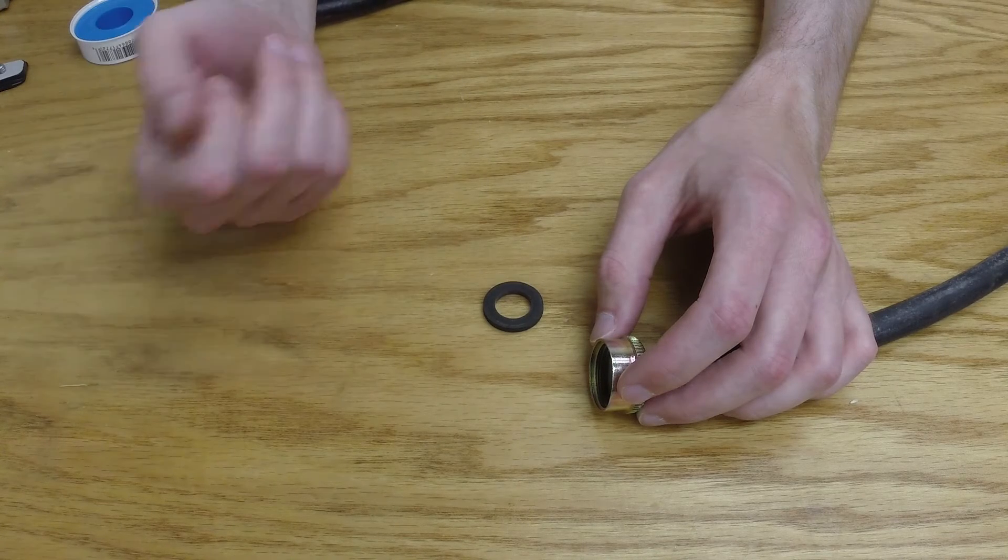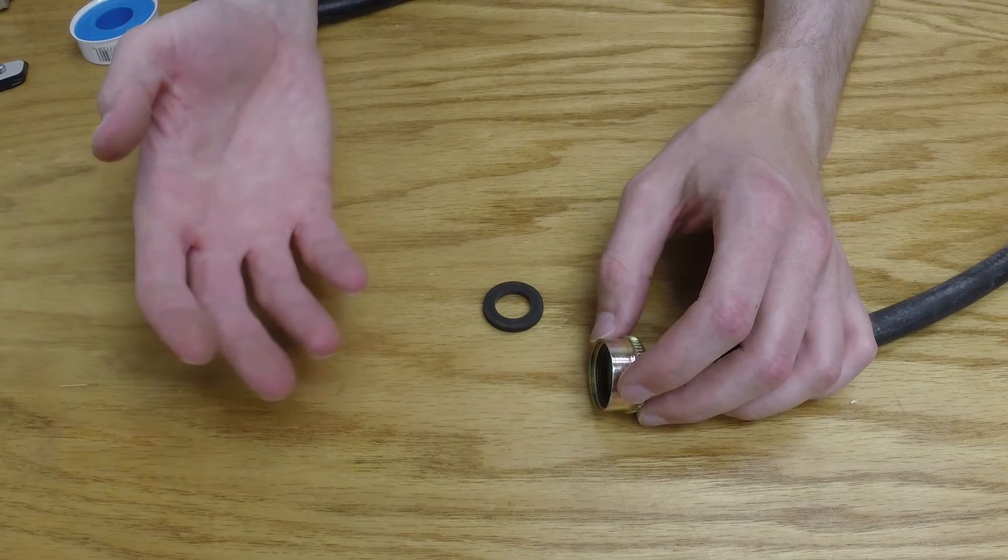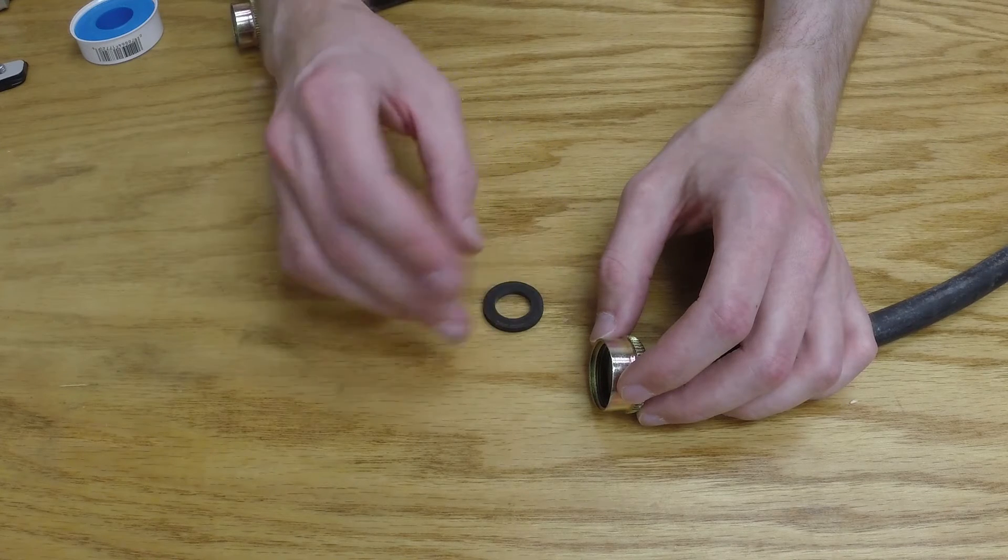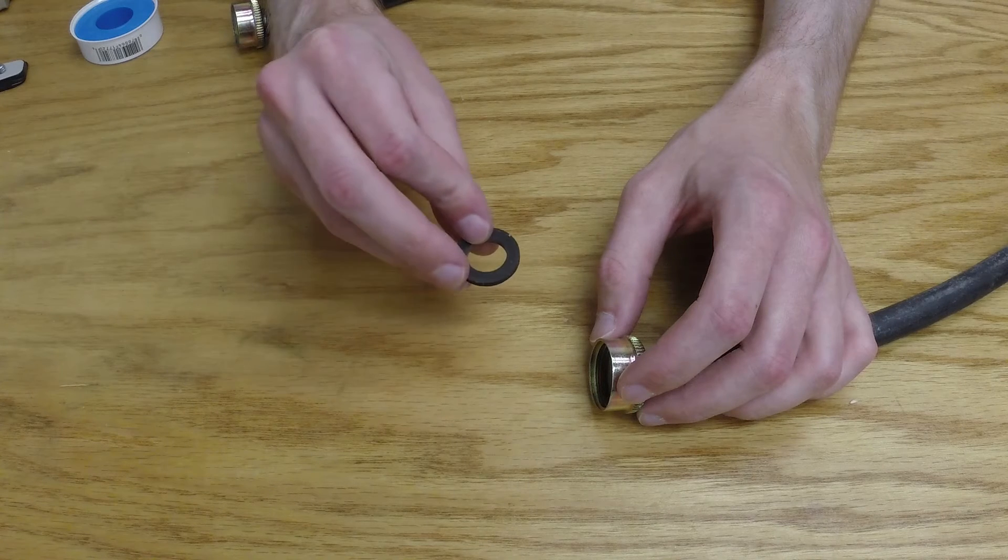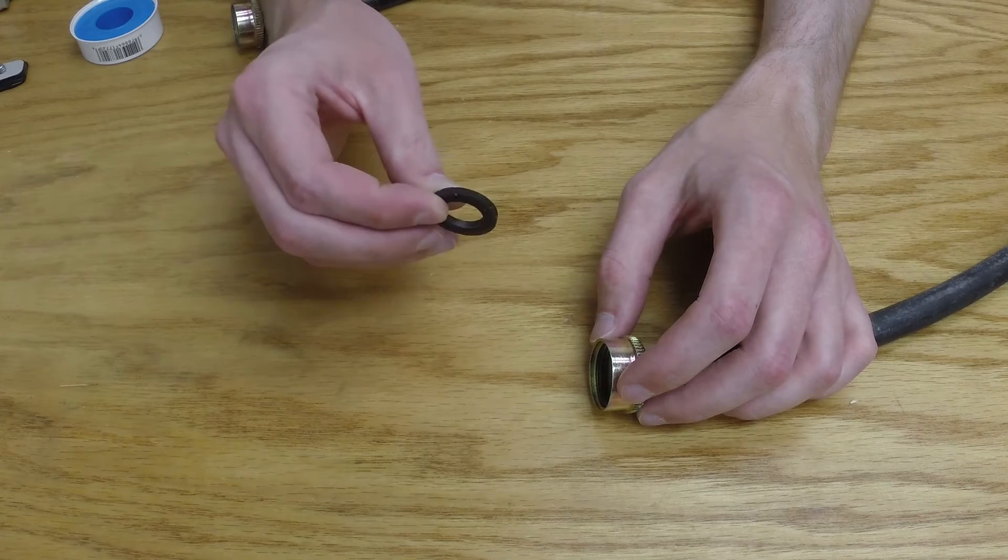So you would drain the oil, you change the oil in the vehicle, you would come back, you'd put the bolt back in. As long as the gasket has remained fixed on the oil pan, that's fine.